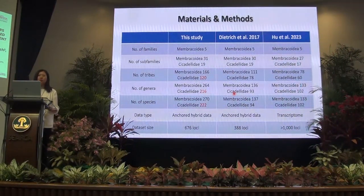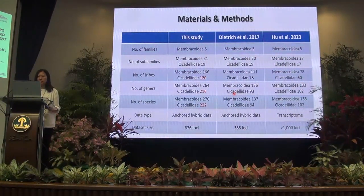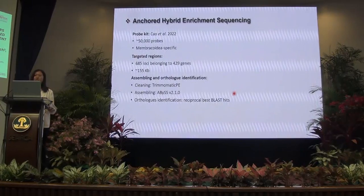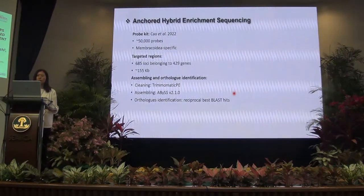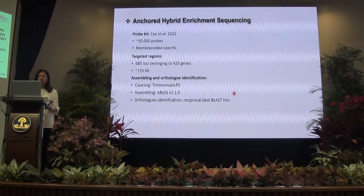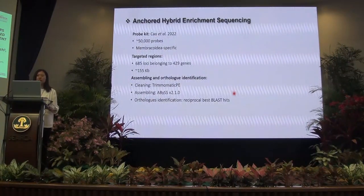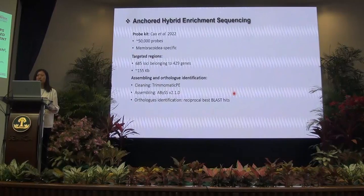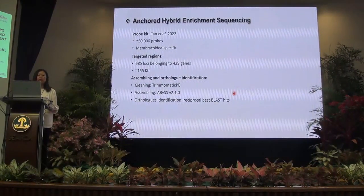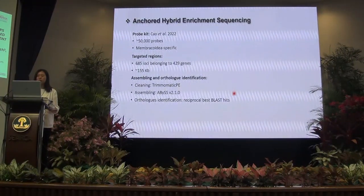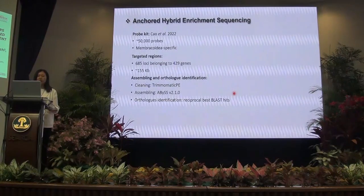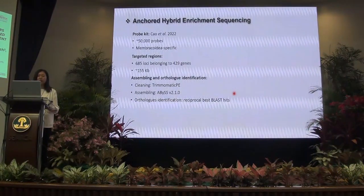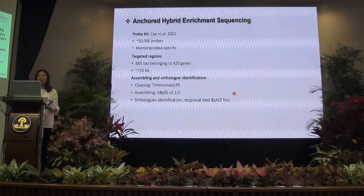The data we are using is target hybrid enrichment data, but we added about 300 more loci compared to the Dietrich study. The method is called target hybrid enrichment sequencing, a kind of targeted sequencing where we use probes to target our regions of interest. The probe set is a modification of the Dietrich study, made specific for treehoppers and leafhoppers. We already used this probe kit to reconstruct the phylogeny of treehoppers in 2022 with very good results. This probe kit can target 685 loci belonging to 429 genes, covering about 155 kilobases.